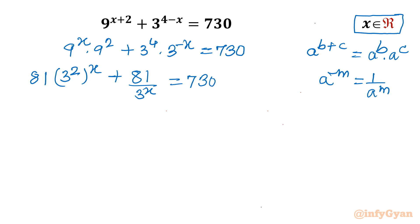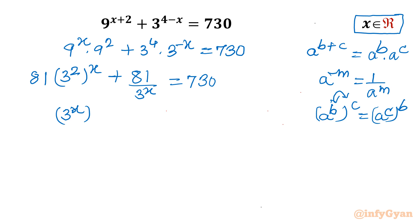The third property: a power b, whole power c, equals a power c, whole power b — we can switch the exponents. So I can write 3 power x whole power 2, giving us 81 times (3 power x)² plus 81 over 3 power x, equal to 730.